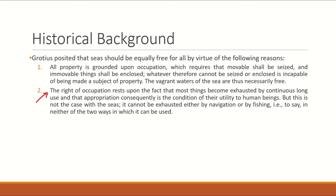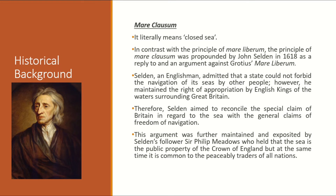Against Mare Liberum, the Mare Clausum theory was forwarded by John Selden, an Englishman and an ardent supporter of the Crown. Mare Clausum literally means closed sea. Selden explained that no state can stop any of its surrounding seas from being navigated, but the state can appropriate its surrounding seas. This argument was used to support Britain's right of appropriation of surrounding waters.